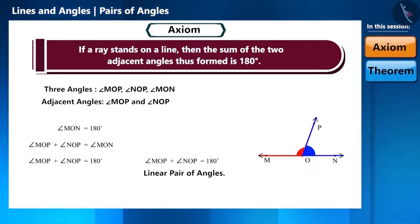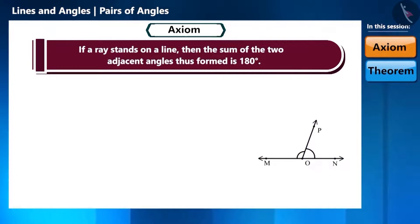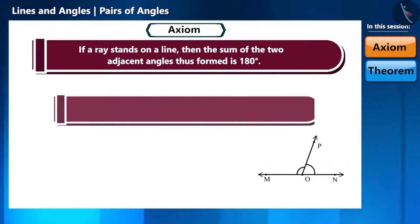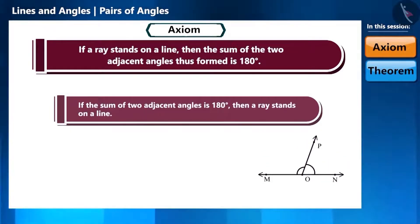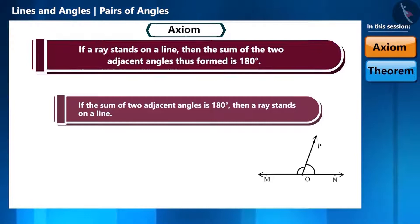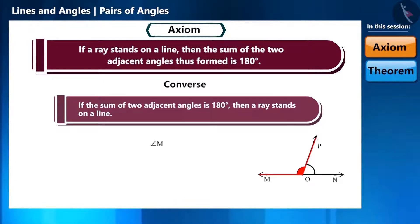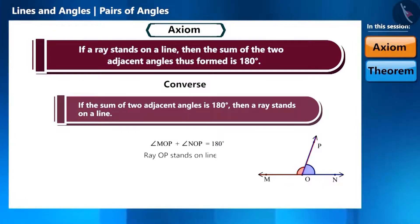Now, the axiom we are going to learn is completely opposite to this axiom. If the sum of two adjacent angles is 180 degrees, then a ray stands on a line. We call this the converse of the axiom that we just learnt. If we are given that angle MOP plus angle NOP is equal to 180 degrees, then we can conclude that ray OP stands on line MN.